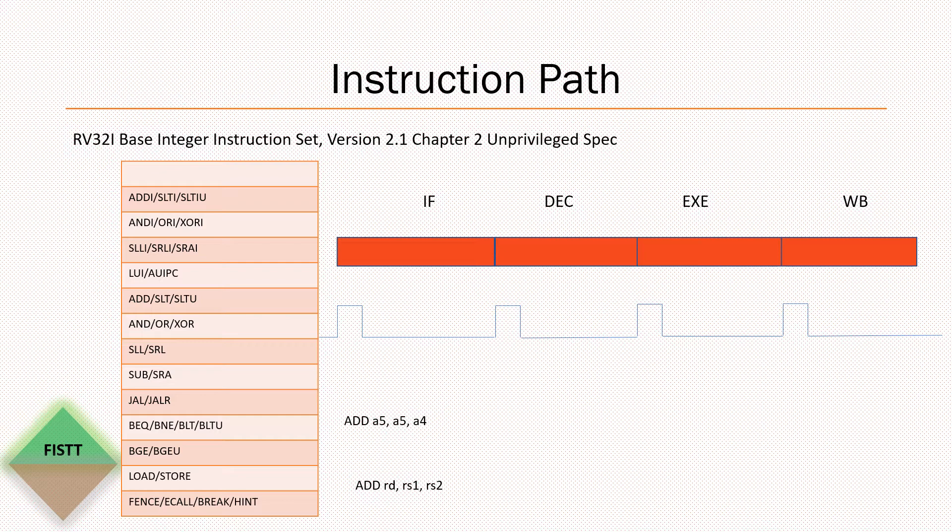To know the scope of changes needed for customizing a RISC-V core, it is better we know about the instruction path in a processor, and that's what this slide is all about. This is the basic instruction set for RV32i. I'm not going to get deep into these instructions. If you want to read by yourself, just go to chapter 2, unprivileged spec, version 2.1.